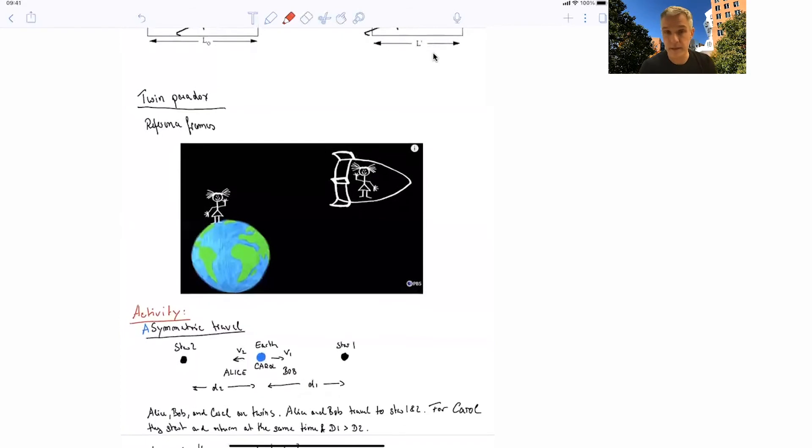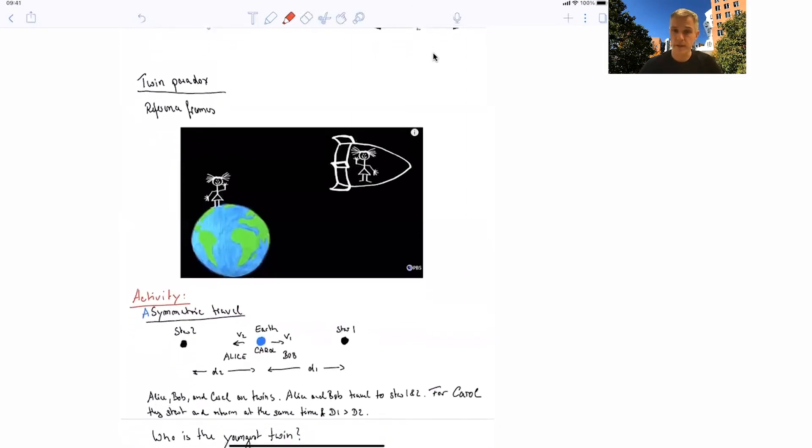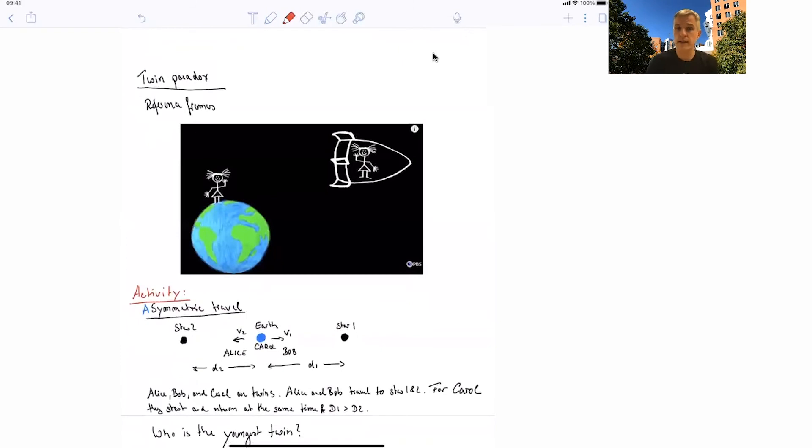So here we have another activity, an asymmetric travel. We discussed also the example where two people move away and then they come back in a symmetric fashion. But here we want to discuss a case where there are three twins. Carol stays on Earth, Bob moves to star 1, and Alice moves to star 2. The distance to star 1 is longer than the distance to star 2. So the question is, in this journey, they both start and they both return at the same time for Carol. But which of the twins is the youngest?